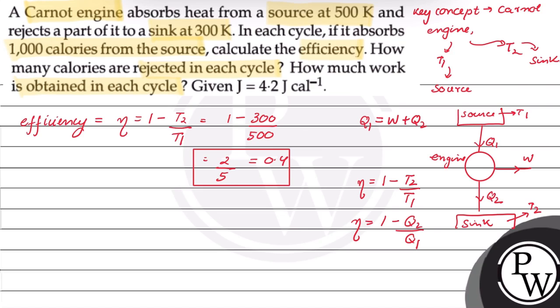How many calories are rejected in each cycle? Q1 upon Q2 is equal to T1 upon T2, or Q2 is equal to 300 times 1000 calories upon 500, which equals 600 calories. This is the amount of heat rejected in each cycle.